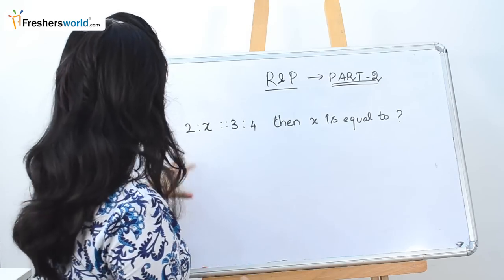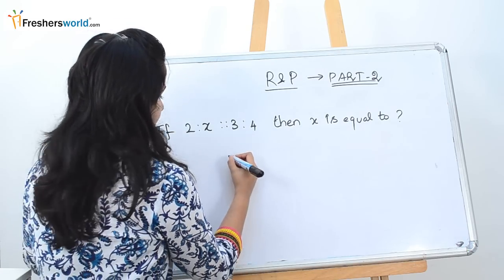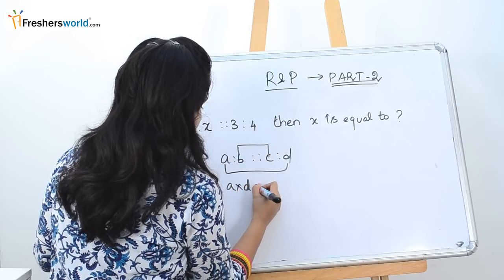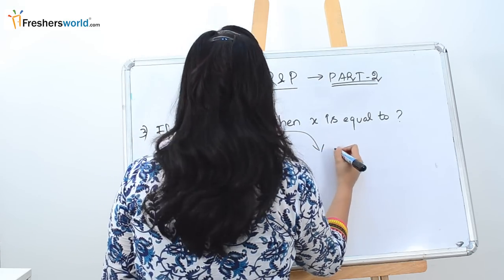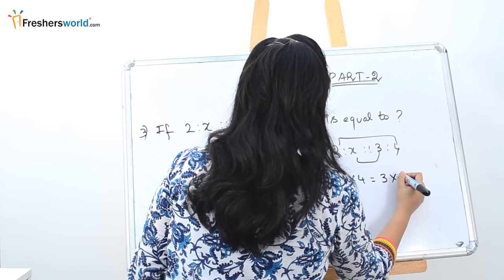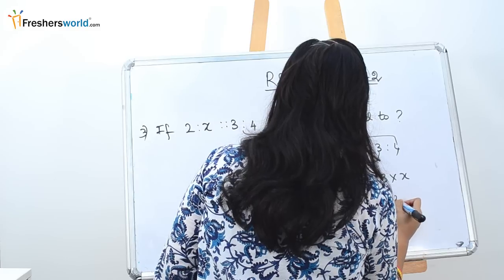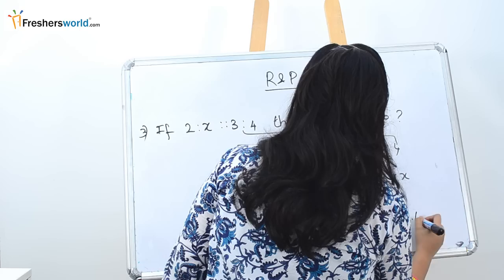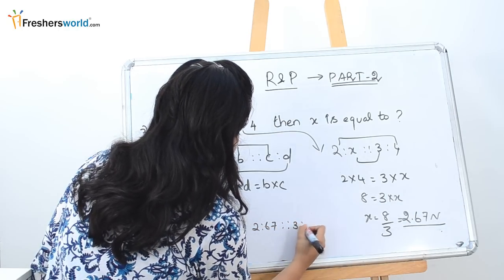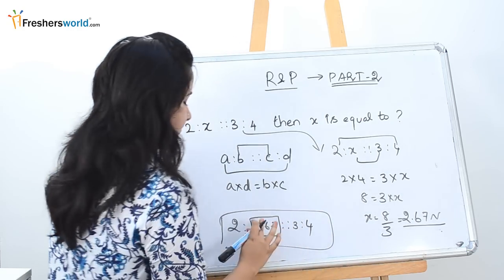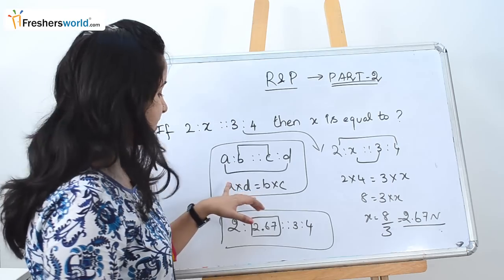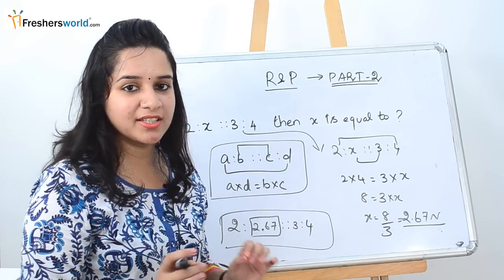The next question is: if 2:x :: 3:4, then x is equal to what? Recall from the earlier video that for a:b :: c:d, the product of means equals the product of extremes, i.e., a × d = b × c. Applying this: 2 × 4 = x × 3, so 8 = 3x, giving x = 8/3 ≈ 2.67. So 2:2.67::3:4. Using this formula you can find any missing variable in a proportion by substituting it as x.